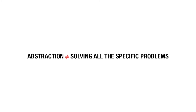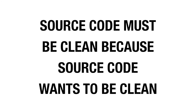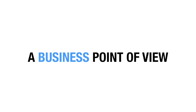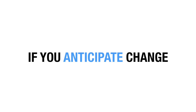Abstraction doesn't mean you have to solve all of the particular problems. It just means you need an architecture that doesn't require you to rewrite the whole application whenever you discover a new requirement. This is not the software developer perspective of 'source code must be clean for its own sake' — it's not code for code's sake. This is a business point of view: if you want to be economical, if you want to pivot with as low a cost as possible, then you need to build flexible architectures. Don't anticipate stupid change, but be smart about the things you do anticipate.